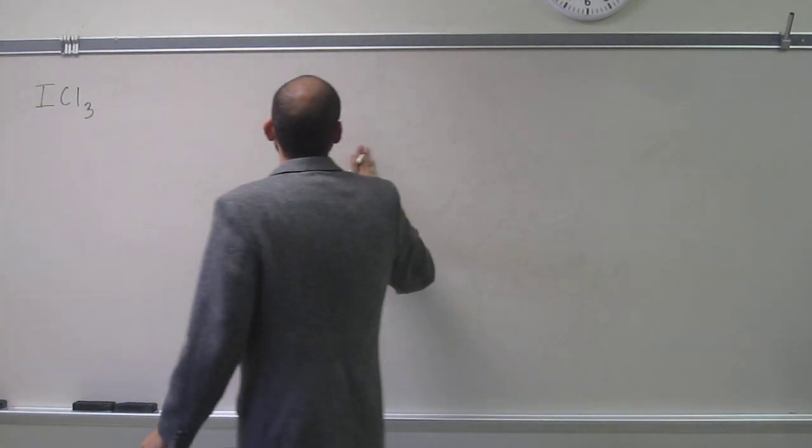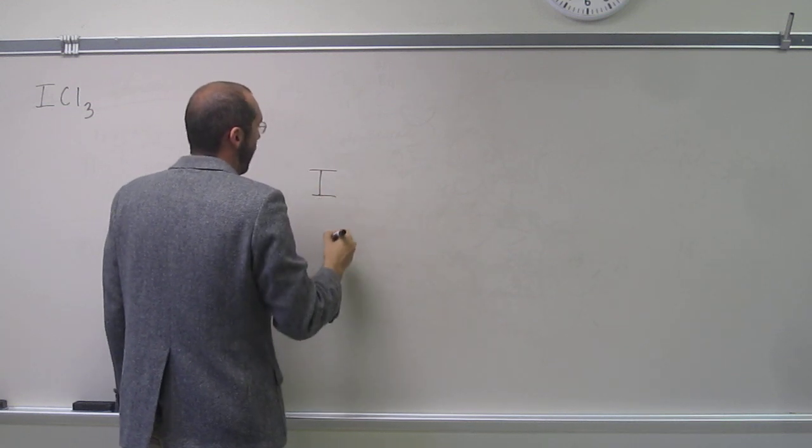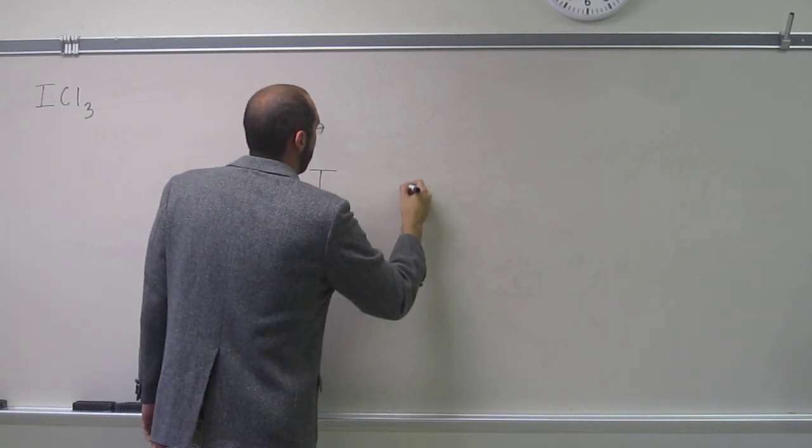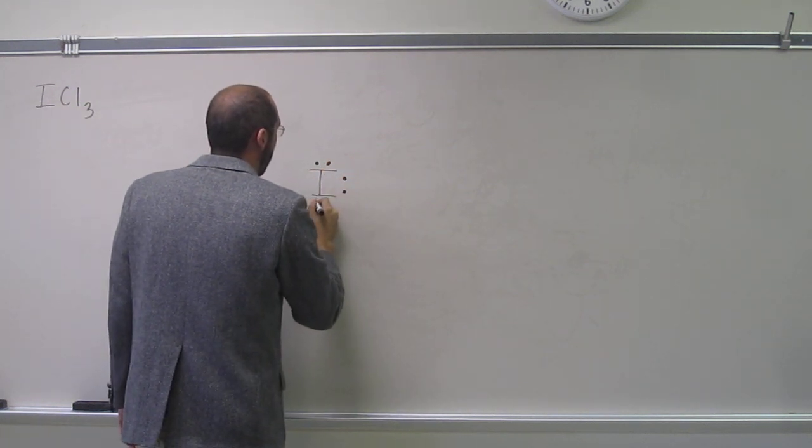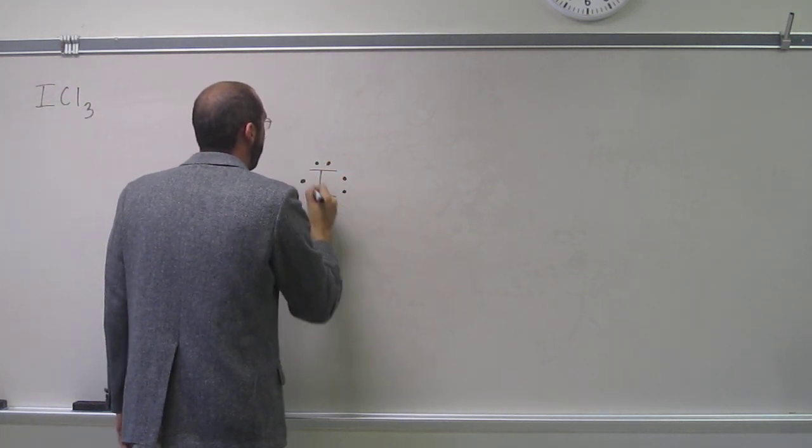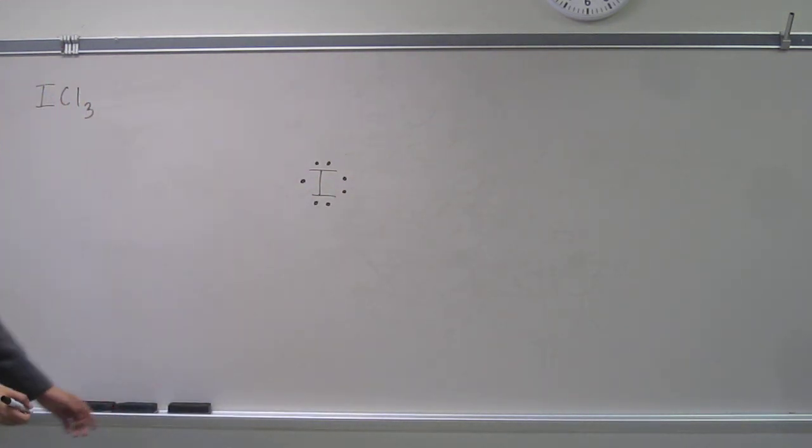So we should expect it to be something like I, let's just draw 1, 5, 6, 7. So we've got something like that. So we've got ICl3, right?